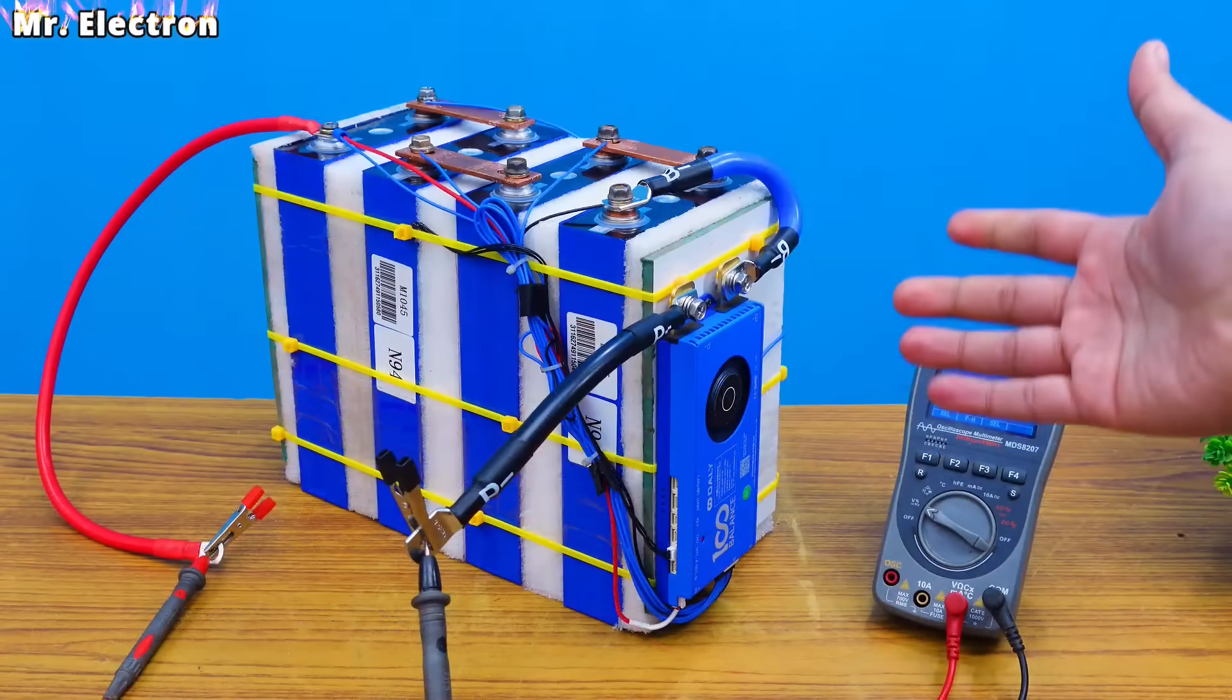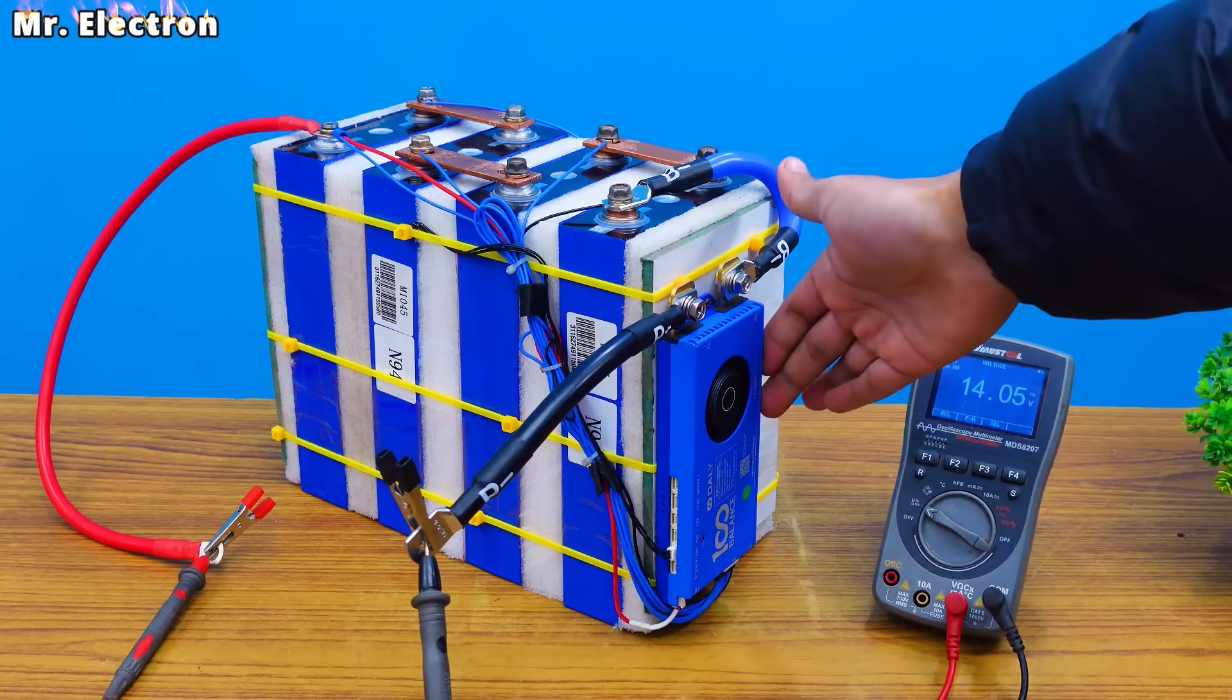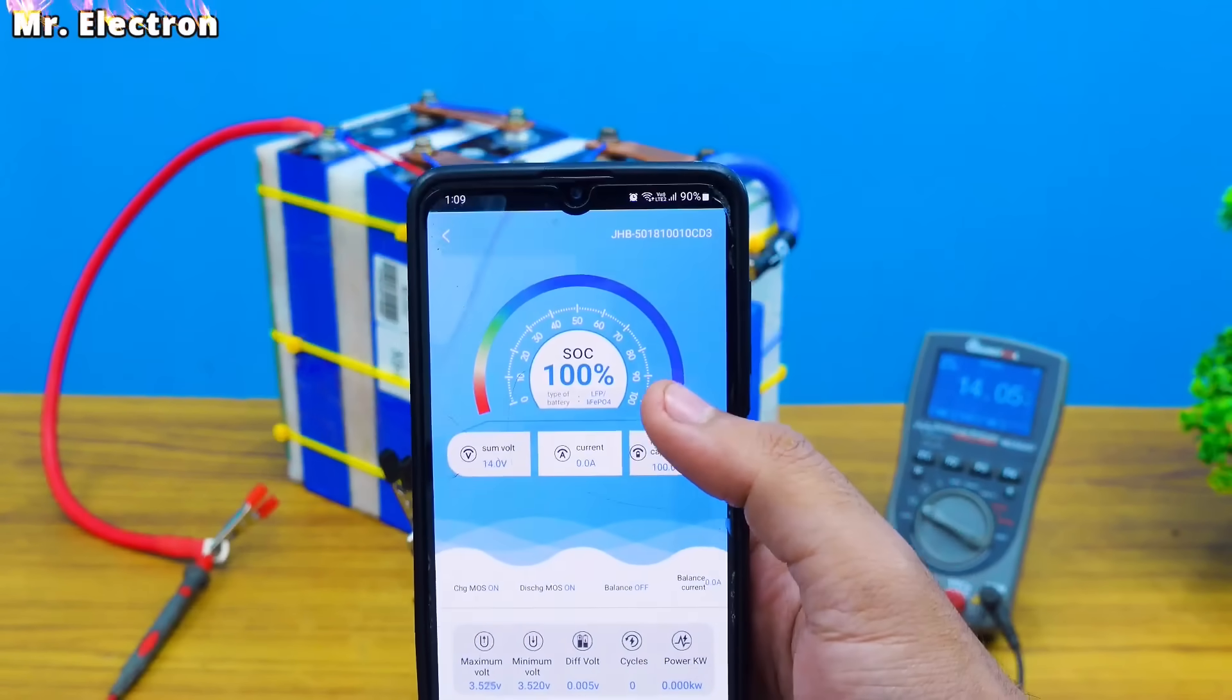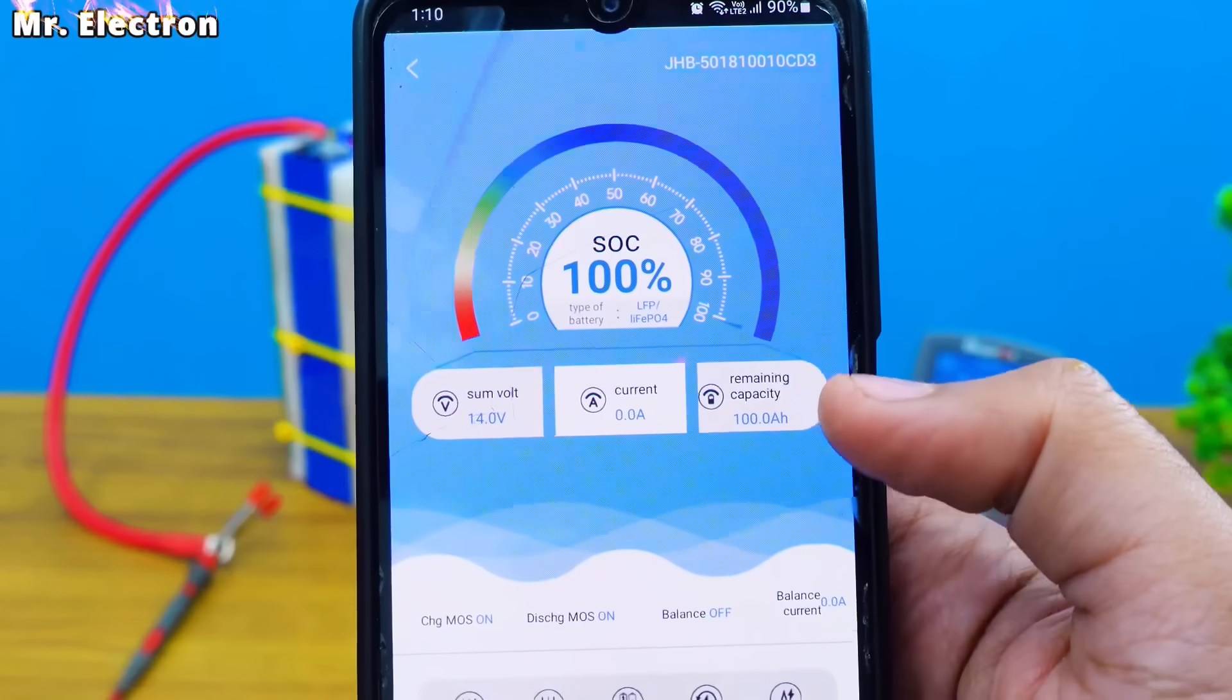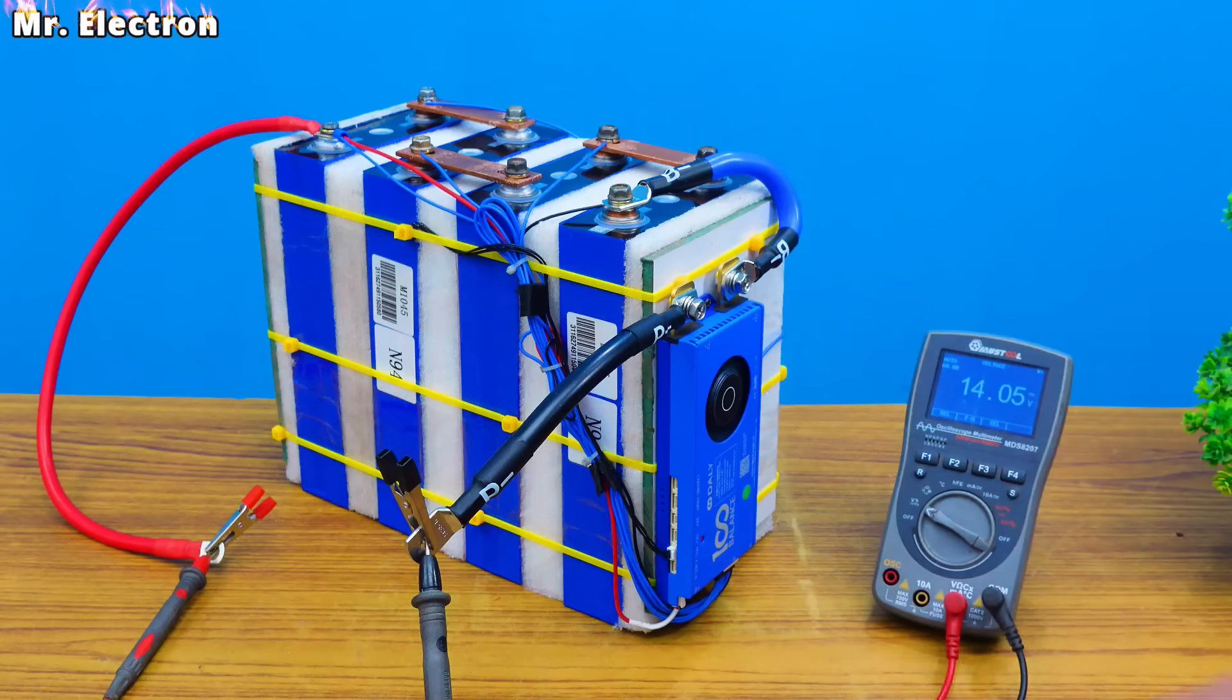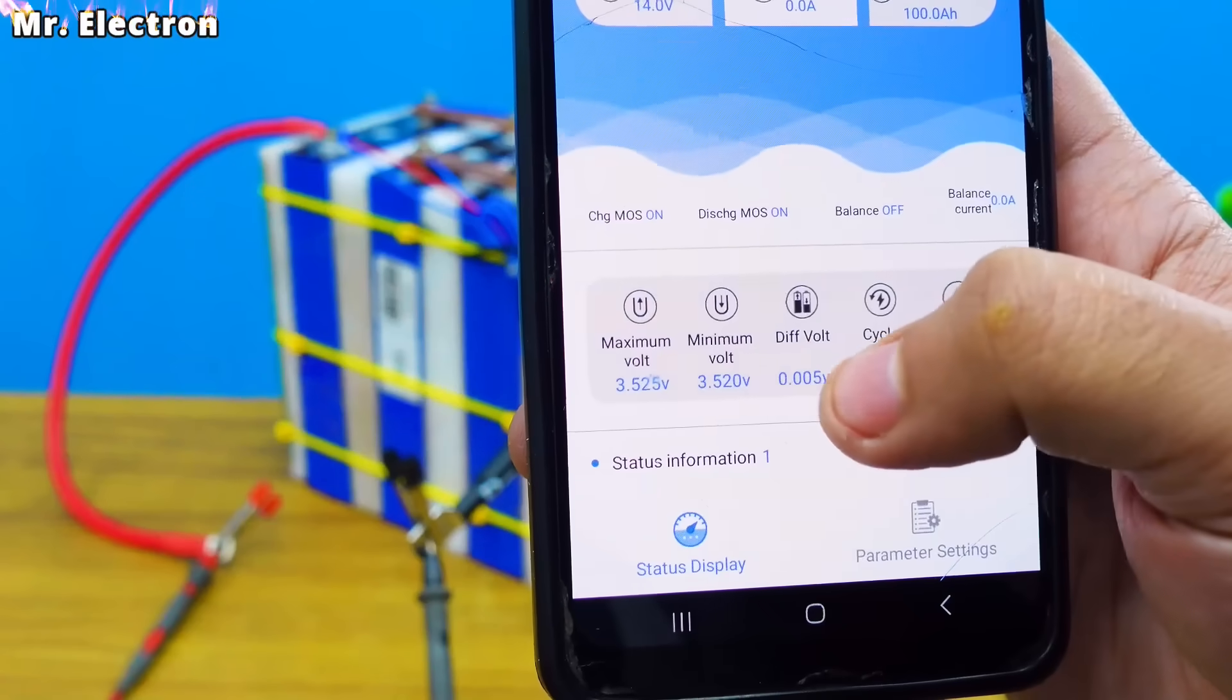So here as you can see that the battery pack is fully charged and it is showing 14.05 volts. Although this beautiful BMS cut off the charging at 14.25. And here I have finally set the SoC at 100%, which means that it has reached 100% capacity. Remaining capacity 100 ampere. Sum voltage 14.0 volts, almost 14 volts. And that you can also see on the multimeter. So it is quite accurate. Maximum cell voltage is 3.524. Here 3.520 minimum cell voltage.